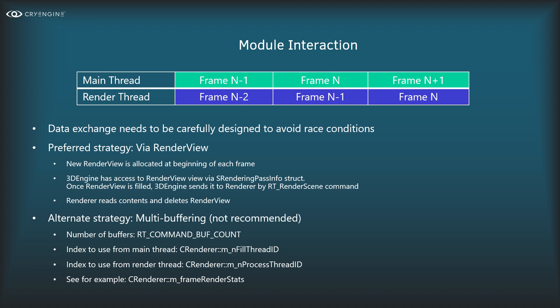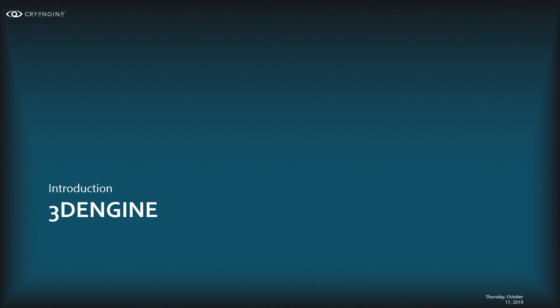There is also a legacy strategy based on multi-buffering. You will still find this in some renderer classes — typically global state being duplicated into two or more copies, where the main thread writes to one copy and the renderer thread reads another. There are helper structs like fillThreadID and processThreadID to index that data. It's not advised to use this because it doesn't scale, and in the future we'll remove all multi-buffering.